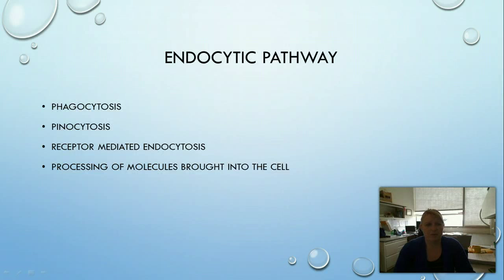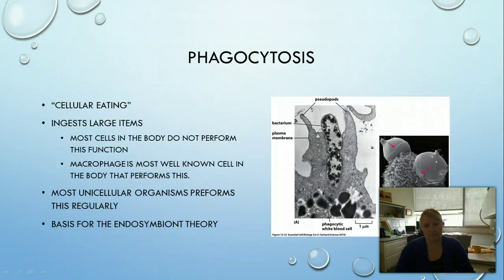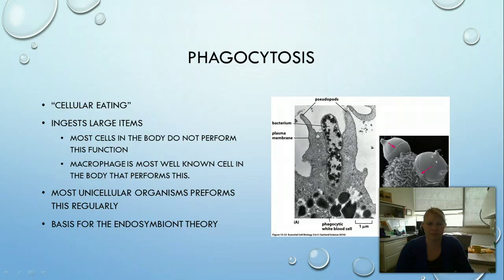Now let's talk about the endocytic pathway. There are three main types: phagocytosis, pinocytosis, and receptor-mediated endocytosis. The first is phagocytosis — cellular eating — where large items are ingested. Most cells in our bodies don't perform this, but macrophages are the best example in multicellular eukaryotes that actually ingest things. Most unicellular organisms, however, perform this regularly, ingesting large cells or debris and breaking them down. This is also the basis for the endosymbiont theory.